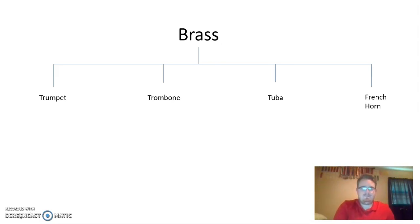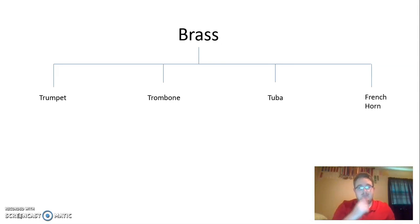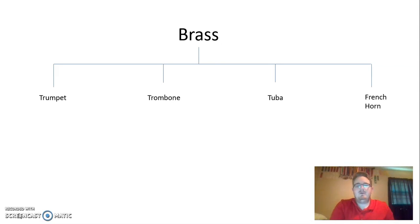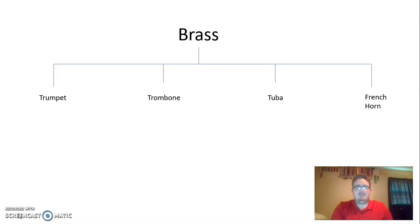So here we're learning about the brass section. We would draw a family tree — at the very top we would write the word 'brass.' I will also demonstrate this on the chalkboard or whiteboard. Then we draw four little lines, just like a family tree, and put all the instrumentation under the brass section. Now when we refer back to it, we know that the brass section contains several instruments, not just one or two.